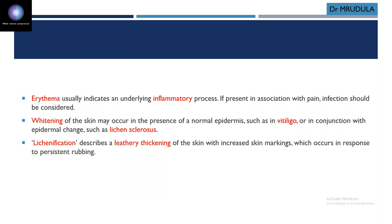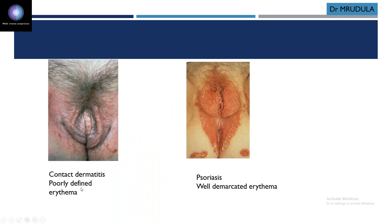The basic lesions that can be found: erythema is reddening of the skin. It can be poorly demarcated or well demarcated. Erythema with pain suggests underlying infection. Only erythema — you have to see if it is poorly or well demarcated. Poorly demarcated erythema is associated with contact dermatitis, while well demarcated erythema is present in psoriasis.